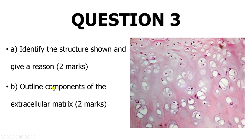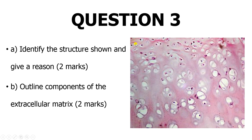This is actually hyaline cartilage. You recognize it by what we call isogenous groups — 'iso' meaning same, 'genus' meaning origin — so these chondrocytes come from the same progenitor cell and are organized within lacunae. The progenitor cell undergoes mitosis and forms cells within the same lacuna, which has a capsule outside. You can have up to a maximum of eight chondrocytes within one lacuna.